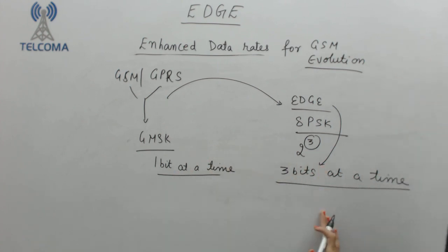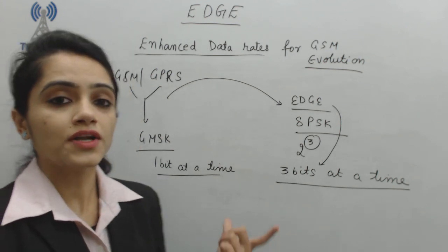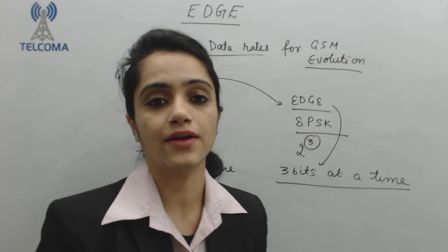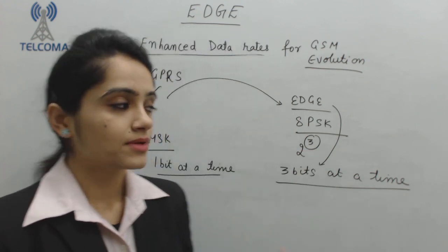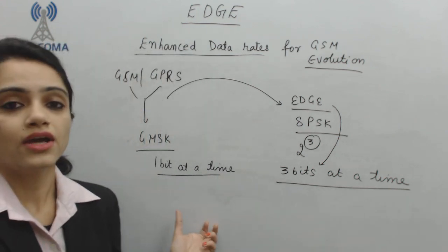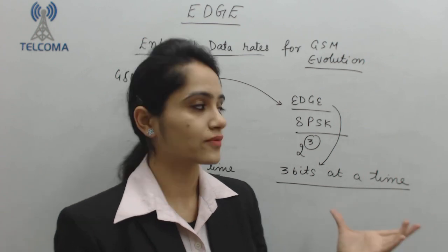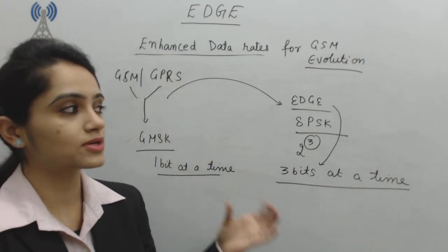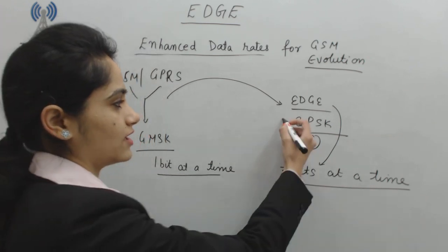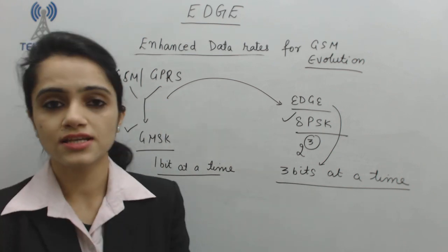This is one of the changes in EDGE — we have changed the modulation scheme. That is why we require to change the hardware as well as software, because the previous hardware and software is working on the GMSK modulation scheme. As we move towards EDGE, we require upgradation of the software as well as hardware, because we have changed the modulation scheme to 8PSK in EDGE technology.